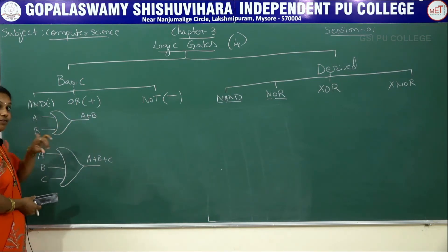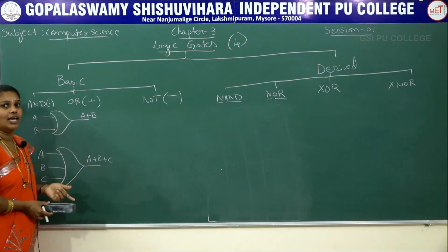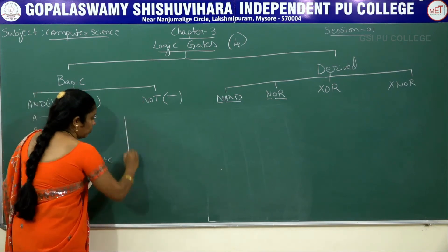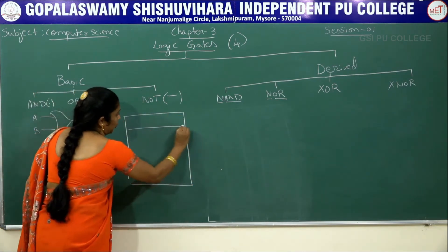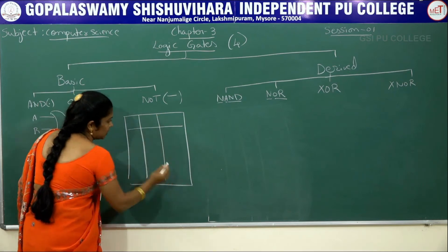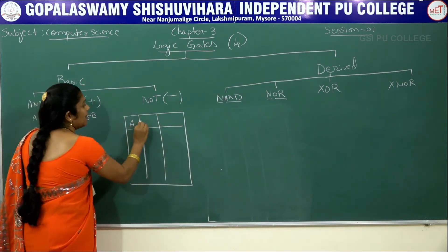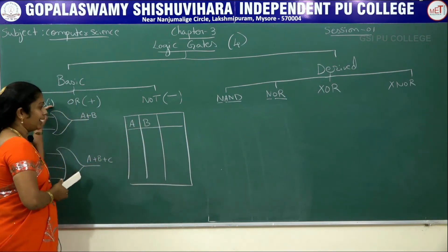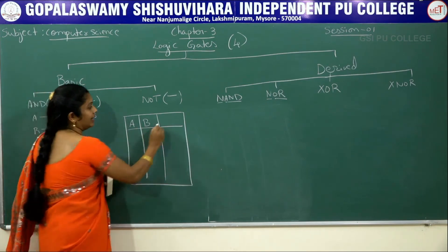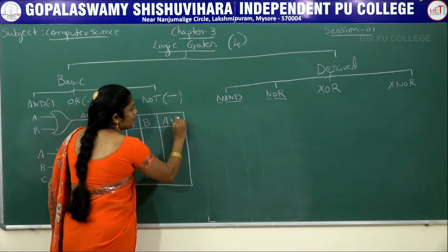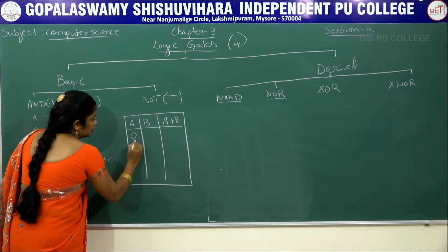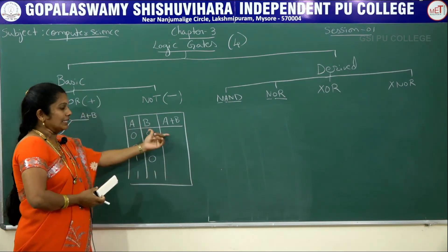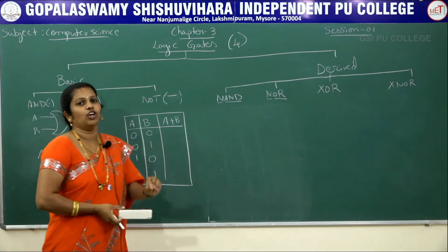Now how to write the truth table for OR gate with two variables. For two variables we get only four combinations: A and B are the inputs, and the output is A plus B — whereas in AND gate the output was A dot B, in OR gate it is A plus B. The combinations are: 0,0 then 0,1 then 1,0 then 1,1.